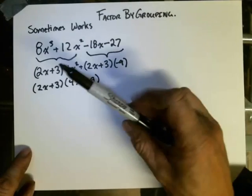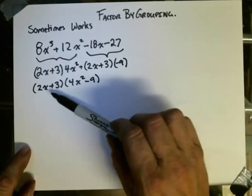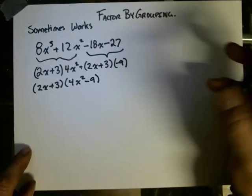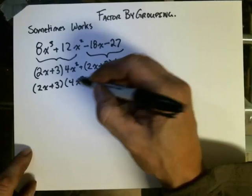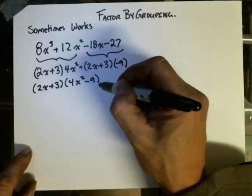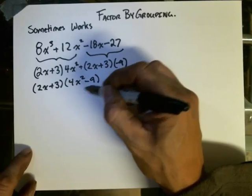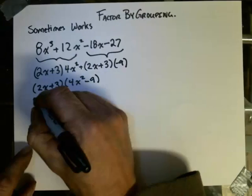So I have factored by grouping this binomial from this trinomial. Now, I am not done because I can actually see that I can further factor the quadratic factor because this is a difference of squares.